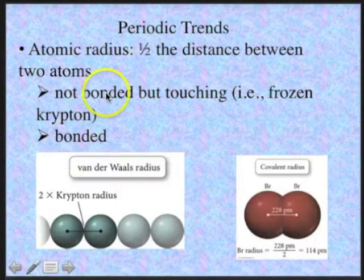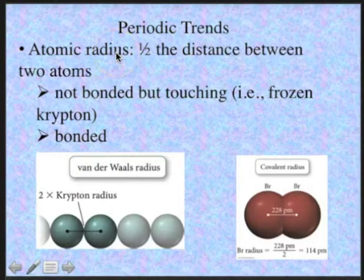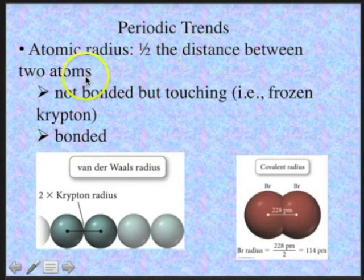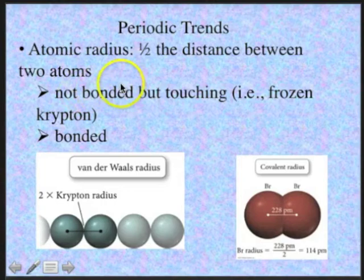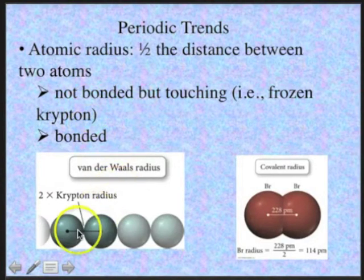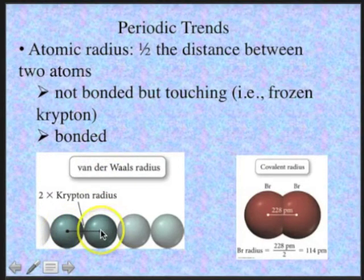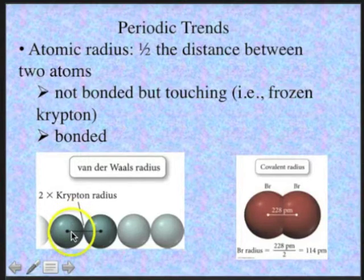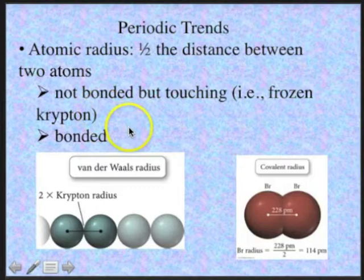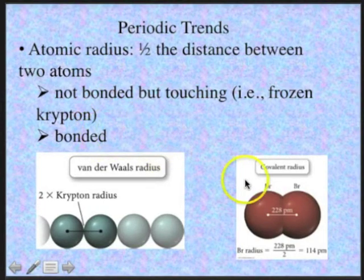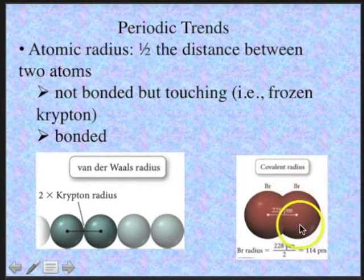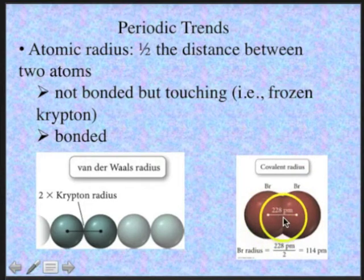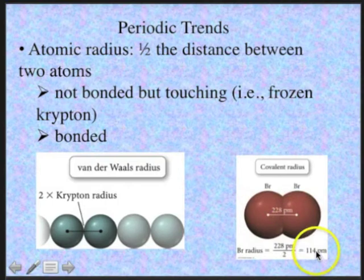Now we're going to talk about periodic trends, starting with atomic radius. How do we find the atomic radius? It's half the distance between two atoms. In a non-bonded situation — like frozen krypton — we can calculate the distance between two krypton atoms from density, and half that distance is the radius. We can also measure it in bonded situations, like two bromine atoms bonded together, where half the bond distance gives the bromine radius.